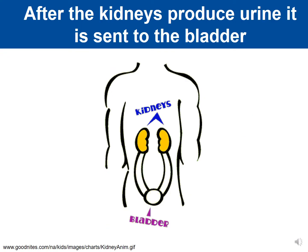Each kidney, about the size of a fist, produces urine. That urine travels down tubes called ureters to the bladder, where it is stored. When the bladder contracts, the urine is released during urination.